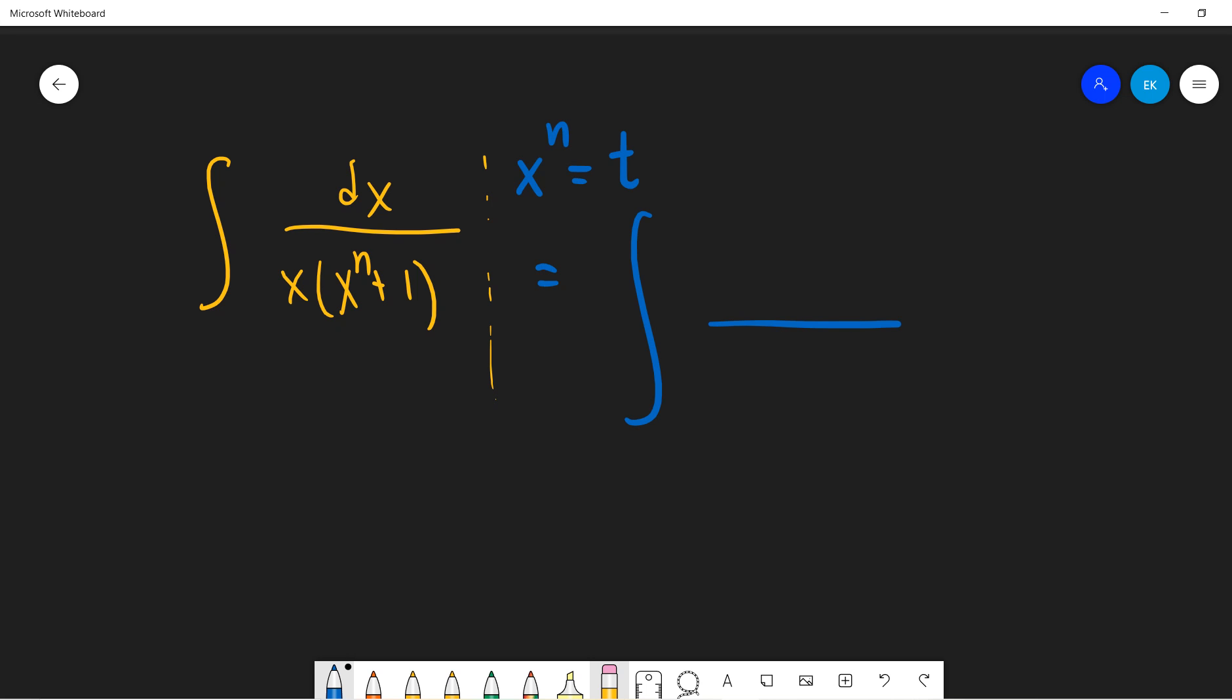Okay, so let's see. You got x, right? So let's see. So now n x to the n minus 1 dx is dt, right? So you can write dx as dt divided by n x to the n minus 1. And the x to the n plus 1, let's express x to the n plus 1 as x times x to the n, and then it becomes t plus 1. Okay, so amazingly, it becomes dt over n x times t plus 1.